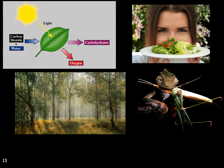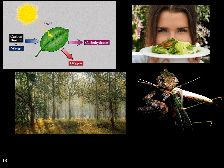Whereas animals must eat organic molecules — what we usually call food — to provide the energy and material resources for life, plants create these organic molecules from sunlight and simple inorganic molecules such as carbon dioxide, water, and nutrients that they obtain from the soil. In a sense, plants build or create their own food, whereas animals must go and find it in their environment by eating plants or preying on other animals.